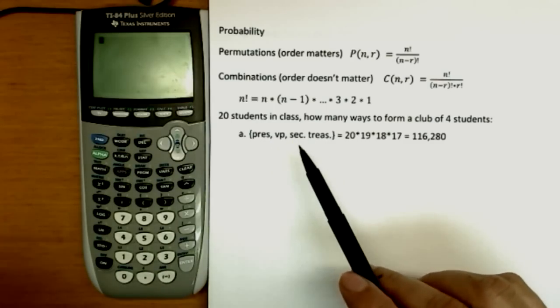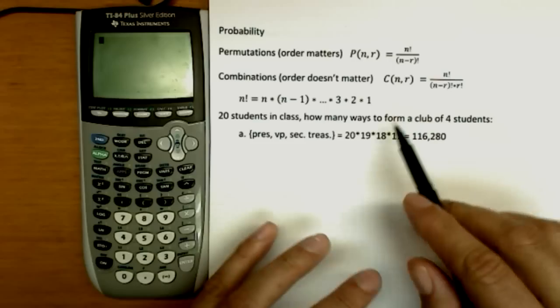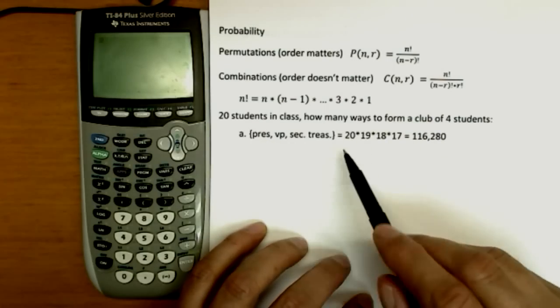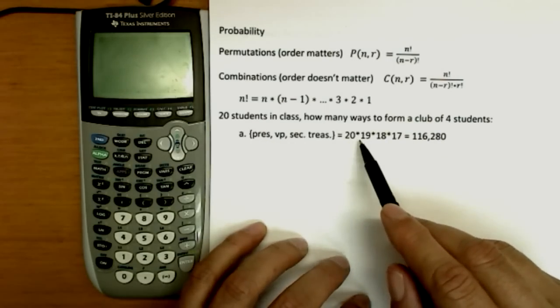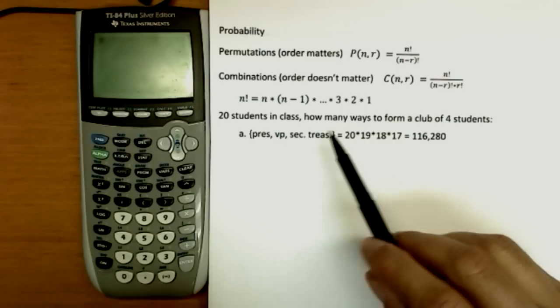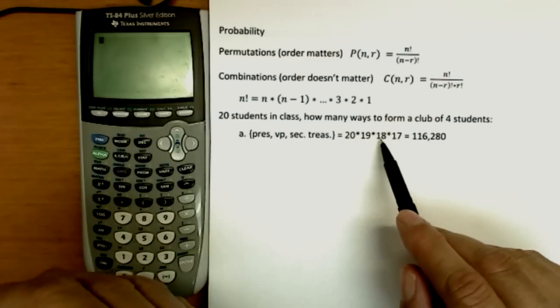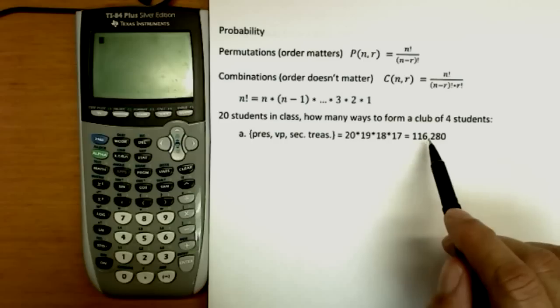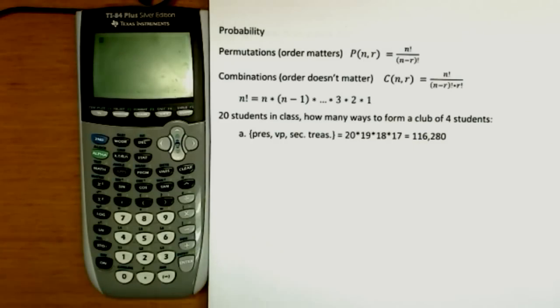Even without our formulas, we could calculate this. 20 students are in the class, so you have 20 people to pick for president. Once you've picked one of those 20, you have 19 left to pick for vice president. And then after you pick two people, you have 18 and 17 and so on left. So we multiply those together and we get an answer, 116,280.